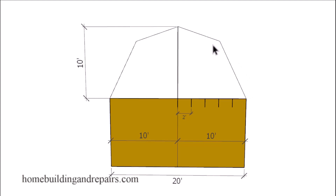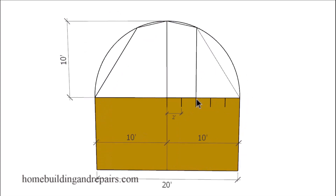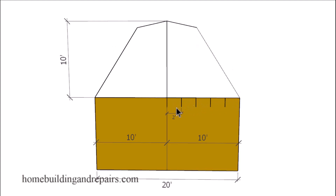And we don't have to stop here. We can use these same increments and move the line over. However, this isn't going to be that much different than the one we did with a five-foot increment on each side, because now we're going to have six feet on this side and four feet on this side, providing us with another roof that might not look like a true gambrel roof.